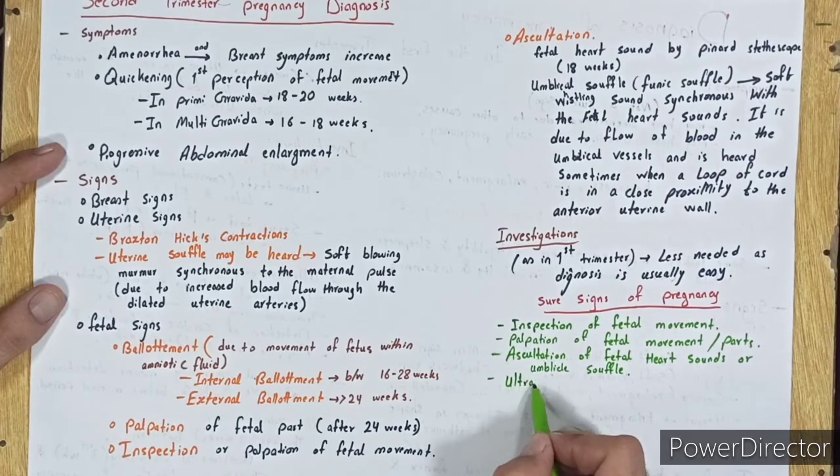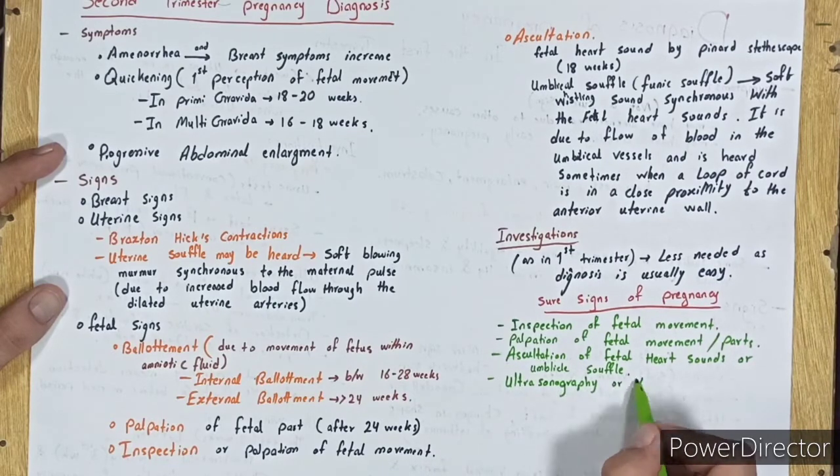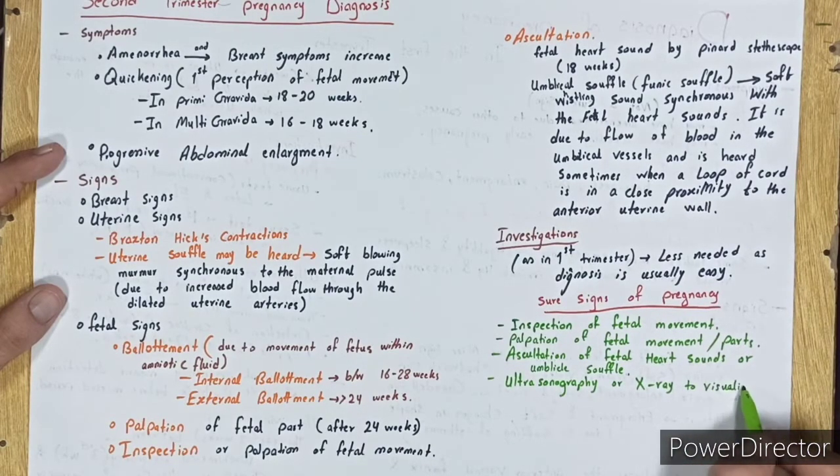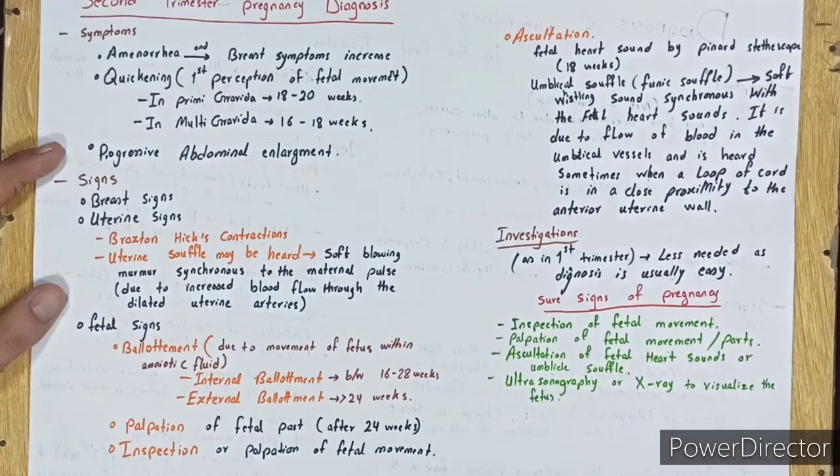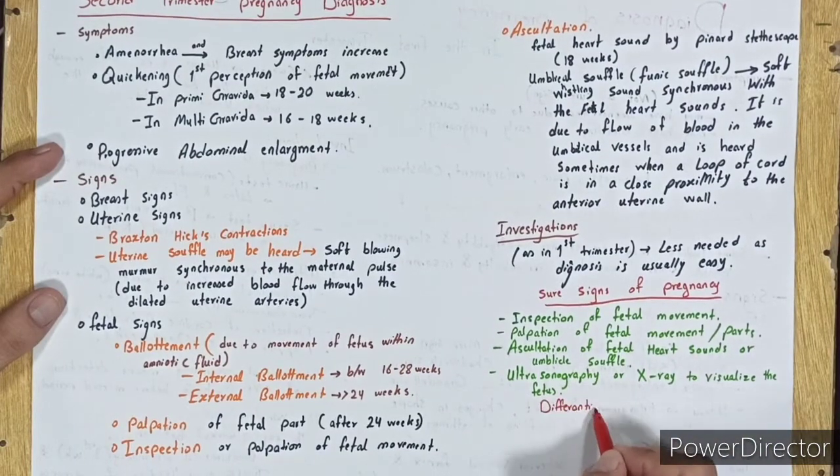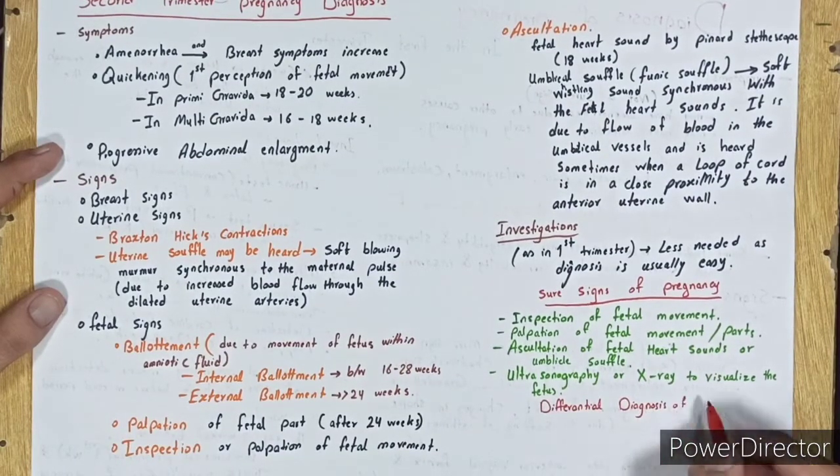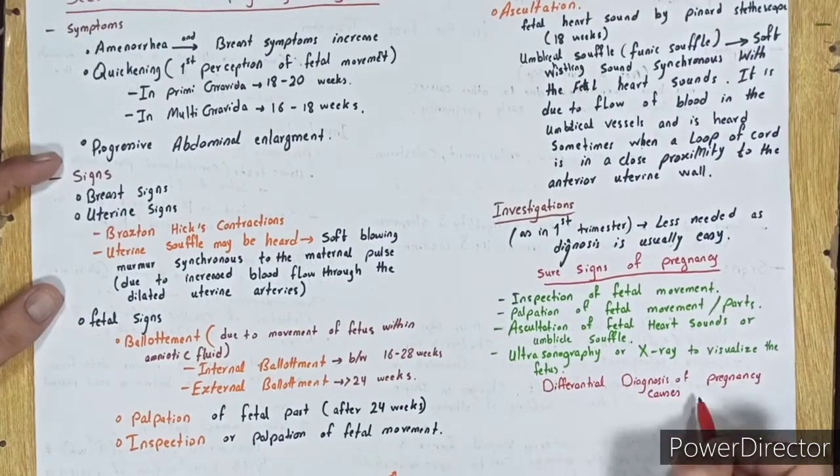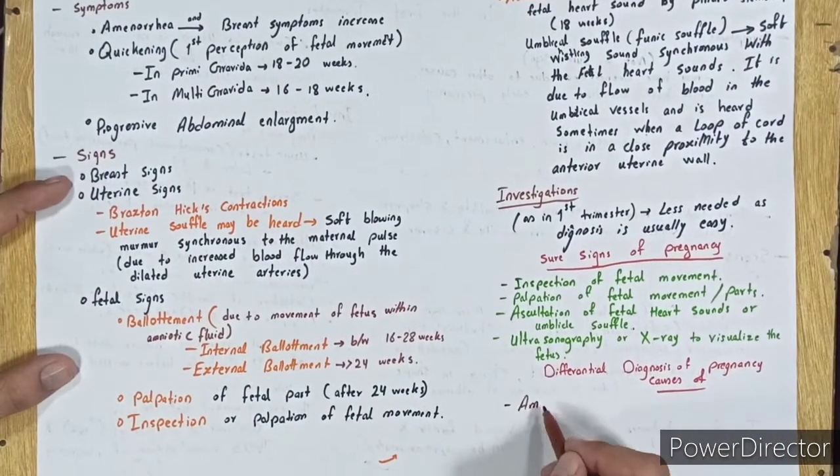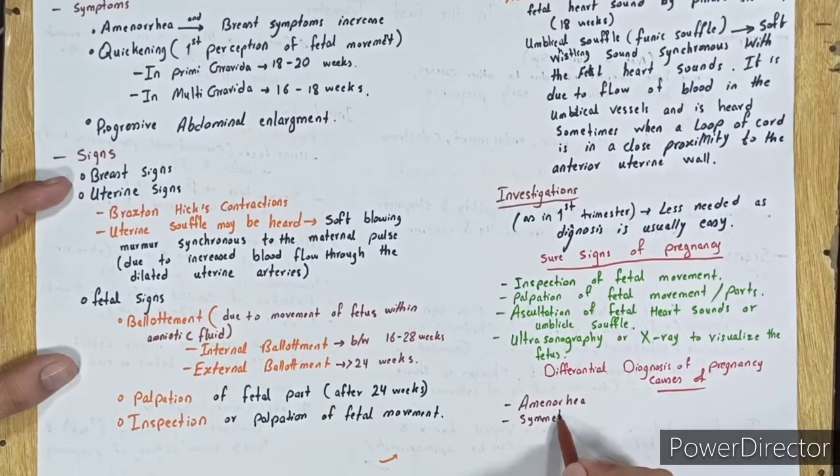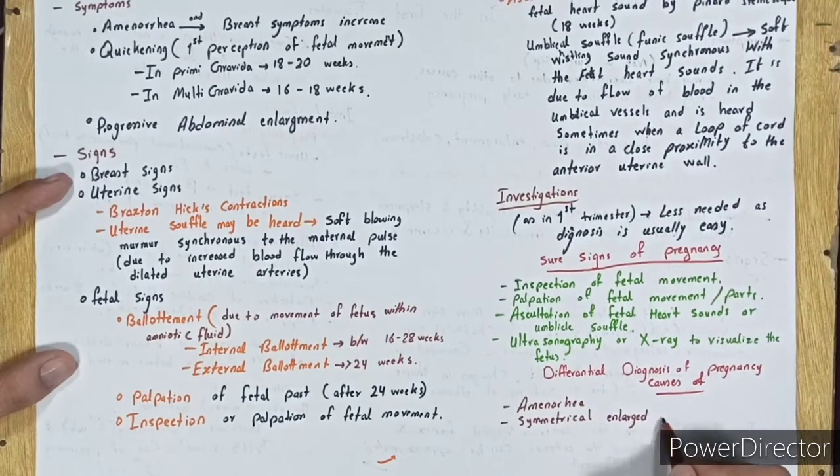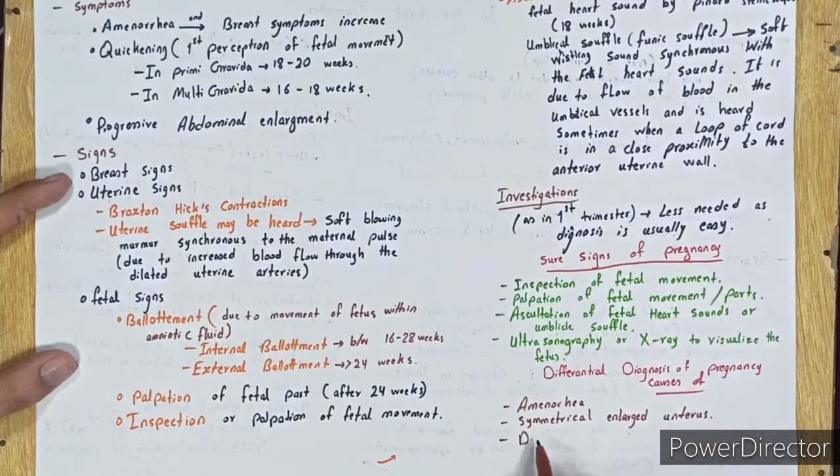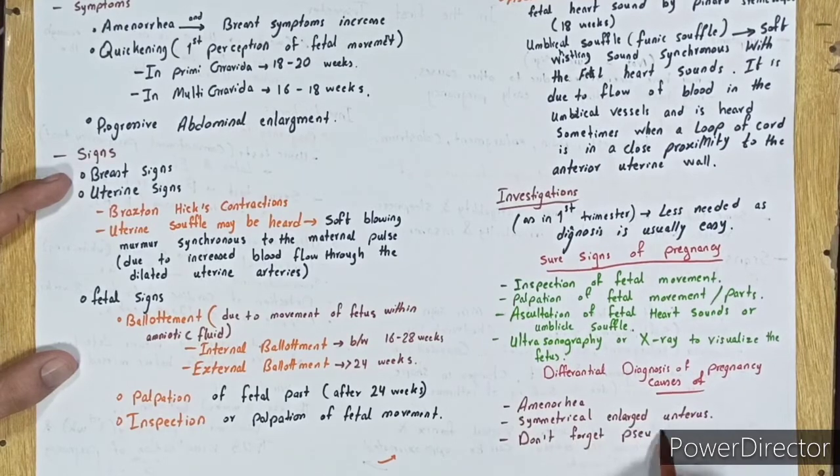Ultrasonography or X-ray to visualize the fetus. Differential diagnosis of pregnancy includes causes of amenorrhea, symmetrical enlarged uterus, and don't forget pseudocyesis. Thanks for watching.